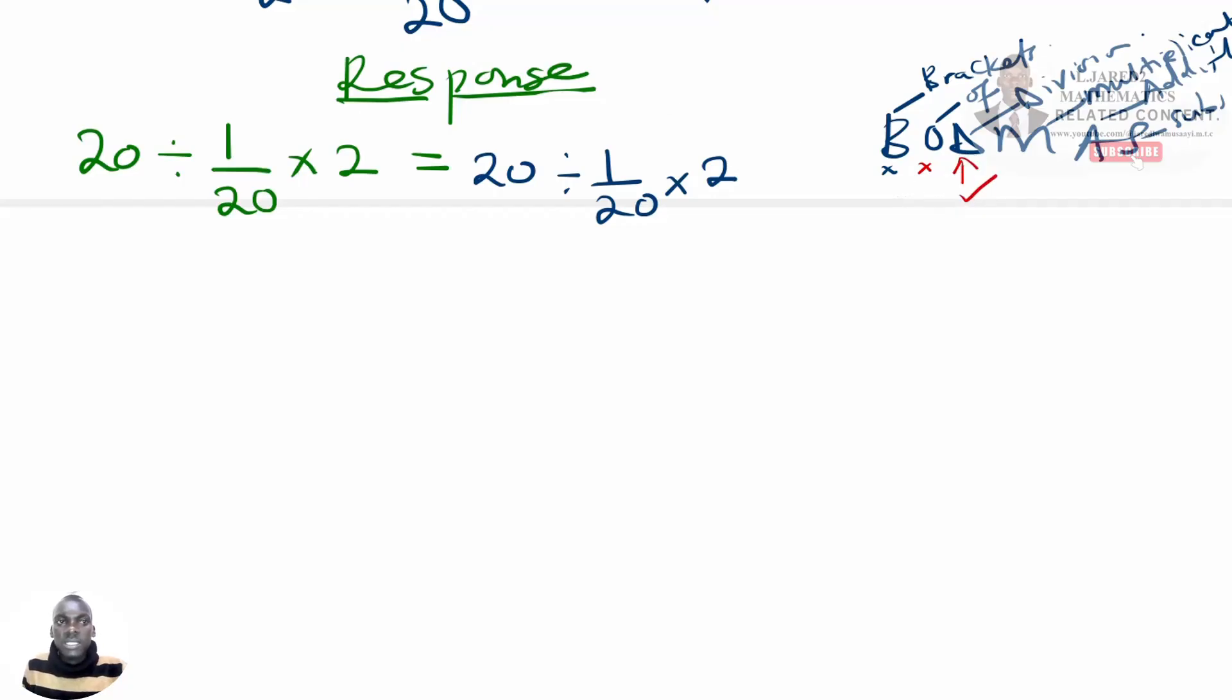So we need to first deal with division, implying that our next step, we are going to have 20 multiplied by... So as we change this sign of division to multiplication, simply we are going to get a reciprocal of 1 divided by 20, which is same as 20 divided by 1 multiplied by 2.